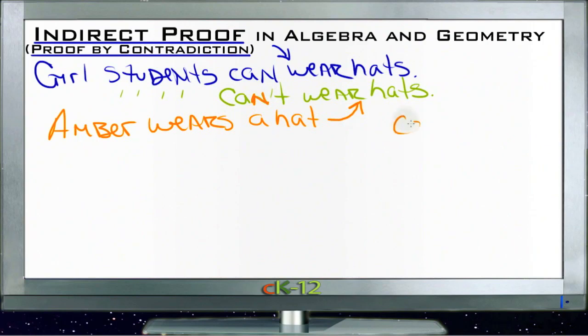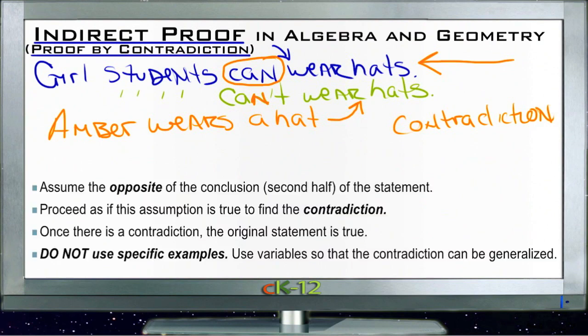We've found a contradiction, something that says that doesn't work. Since it can't be true that girls can't wear hats, it must then follow that it is true that girls can wear hats, because we've proven that the opposite cannot possibly be the case. So there's a set of rules you want to keep in mind as you're trying to prove things by contradiction or indirectly in algebra and geometry.